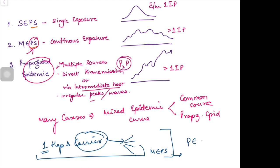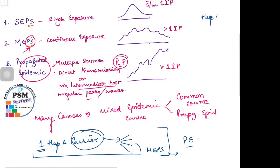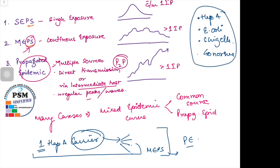Diseases like Hepatitis A, E. coli infections, Shigella infections, gonorrhea, and other RTI/STI infections indeed have a mixed pattern. They may show multiple exposure or propagated epidemic depending on what level of the epidemic curve we are seeing at that particular point. It's not an all-or-none phenomenon. All the very best, take care and bye bye.